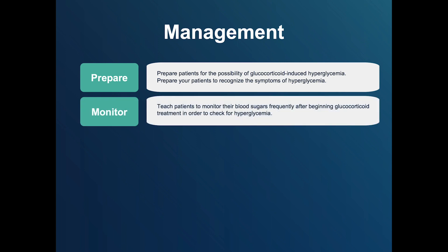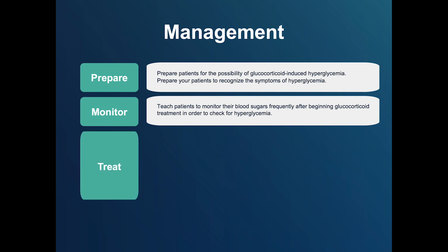The second step is to Monitor. Teach patients to monitor their blood sugar levels frequently after beginning glucocorticoid treatment. It may take several days to see evidence of hyperglycemia, and some types of glucocorticoids do not raise blood sugar levels at all hours of the day. Patients should monitor for many days after starting treatment and, ideally, at the time of day when the drug is predicted to be at its peak effect.